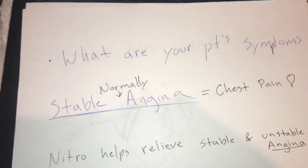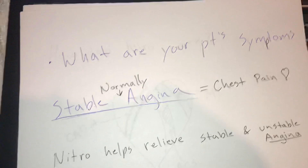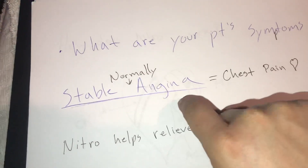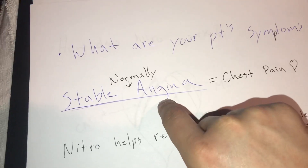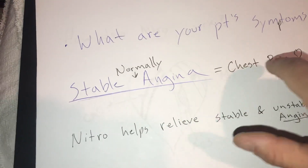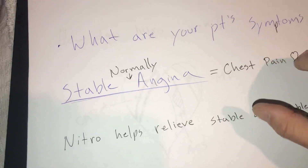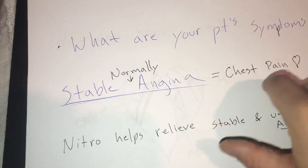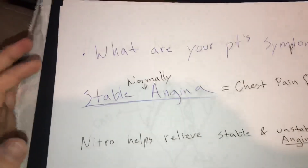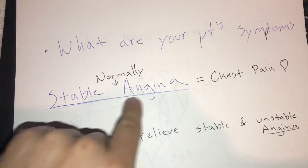When would this patient normally use their nitroglycerin? A symptom would be chest pain — specifically angina. Every time you see angina, think of chest pain that relates to the heart itself. Angina is chest pain because there's an issue with the heart — part of the heart isn't getting oxygen and blood, and we call that chest pain angina. A patient with CAD, coronary artery disease, will usually have what's called stable angina.